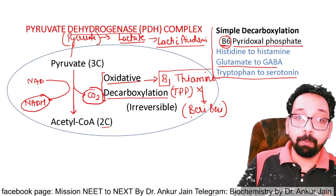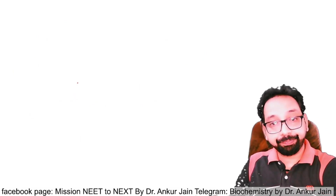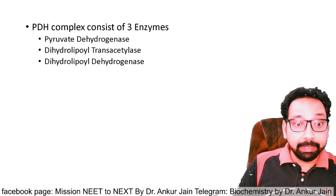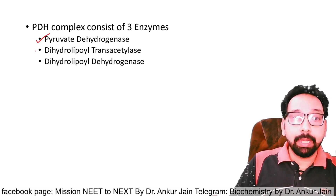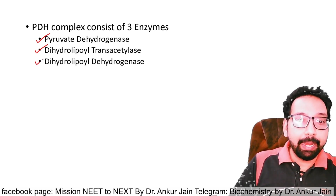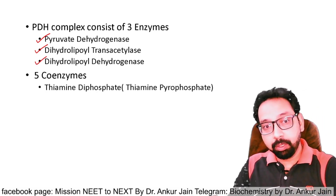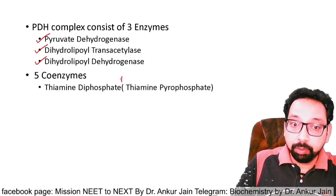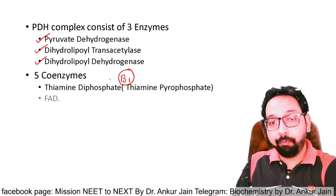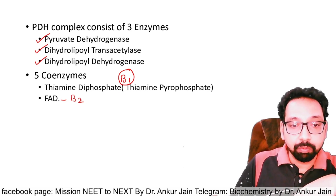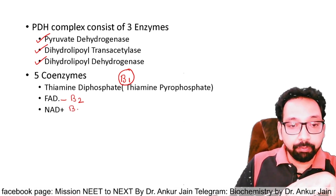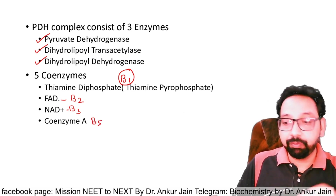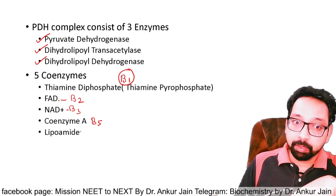The pyruvate dehydrogenase complex is a multi-enzyme complex with three enzymes: pyruvate dehydrogenase, dihydrolipoyl transacetylase, and dihydrolipoyl dehydrogenase. There are five coenzymes: thiamine diphosphate (TPP) — active form of vitamin B1; FAD — active form of vitamin B2; NAD — active form of vitamin B3; coenzyme A — active form of vitamin B5; and lipoamide (lipoic acid).